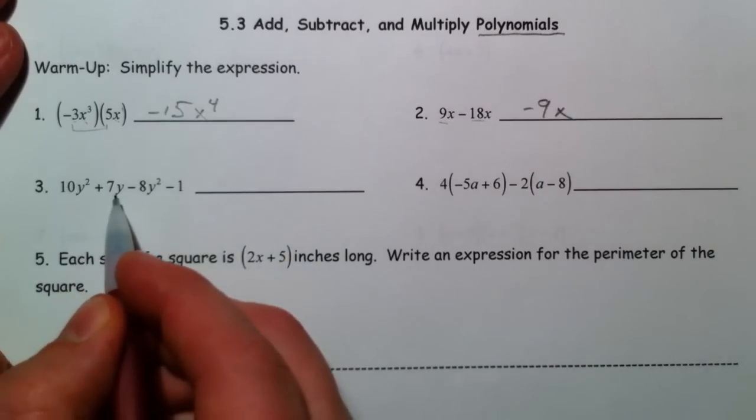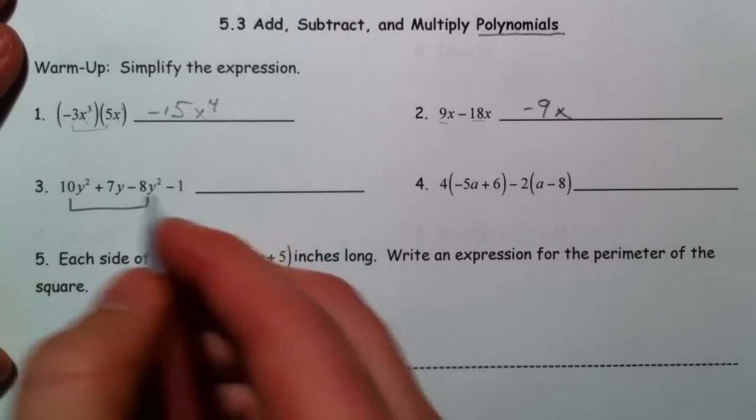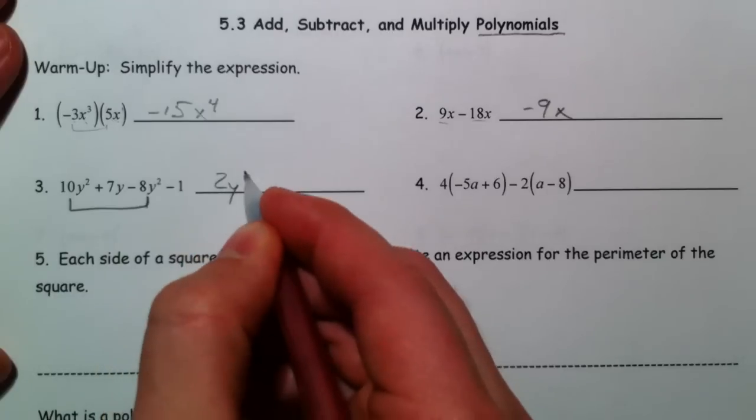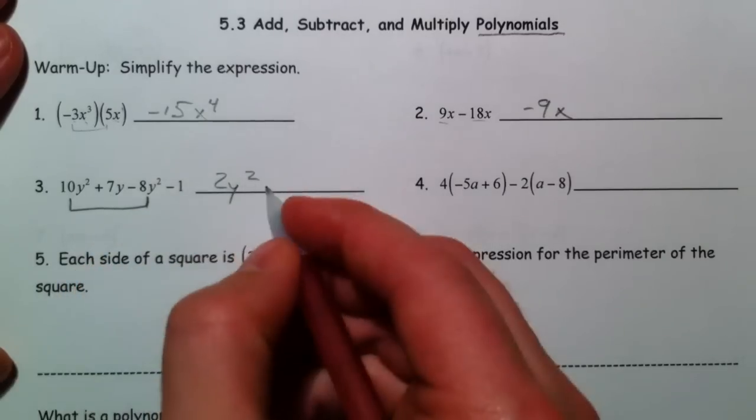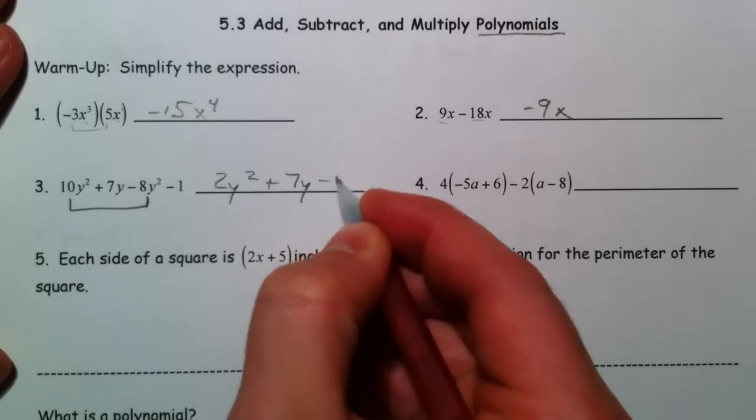10y squared plus 7y minus 8y squared, so we can combine those two, and 7y minus 1.